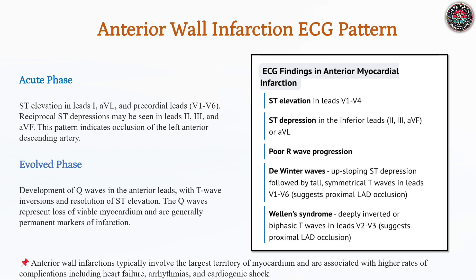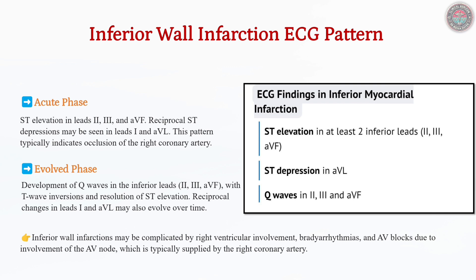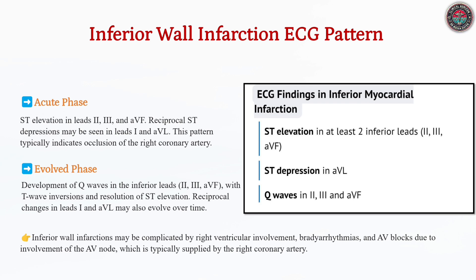Inferior wall infarction caused by RCA or LCX occlusion presents with ST elevation in leads II, III, and AVF, with reciprocal ST depression in lead I and AVL. It often affects the AV node, predisposing patients to bradyarrhythmias and AV block. Right ventricular infarction should be suspected, as it requires fluid resuscitation while avoiding nitrates and preload-reducing agents.